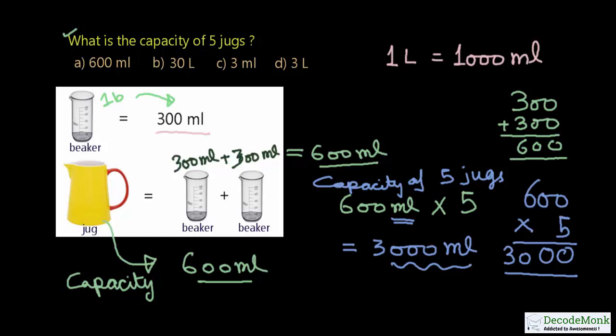Let's check the given options. The first option is 600 milliliters, which is the capacity of 1 jug, not 5 jugs, so this is not the answer. Next is 30 liters.